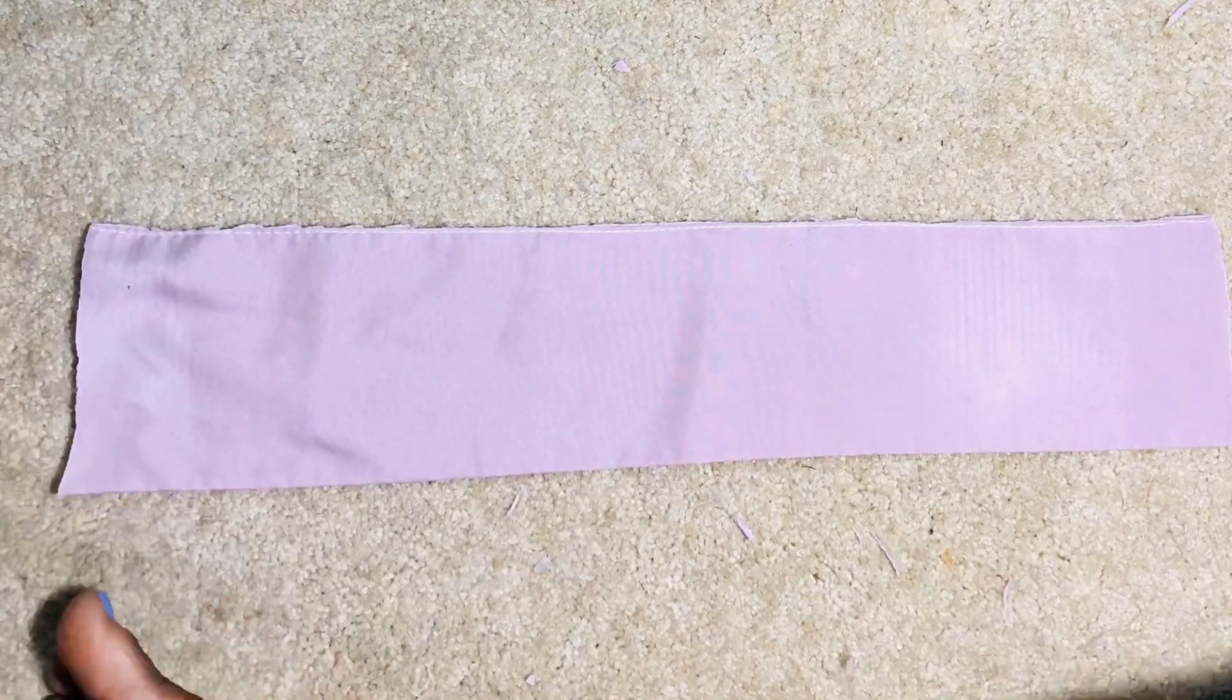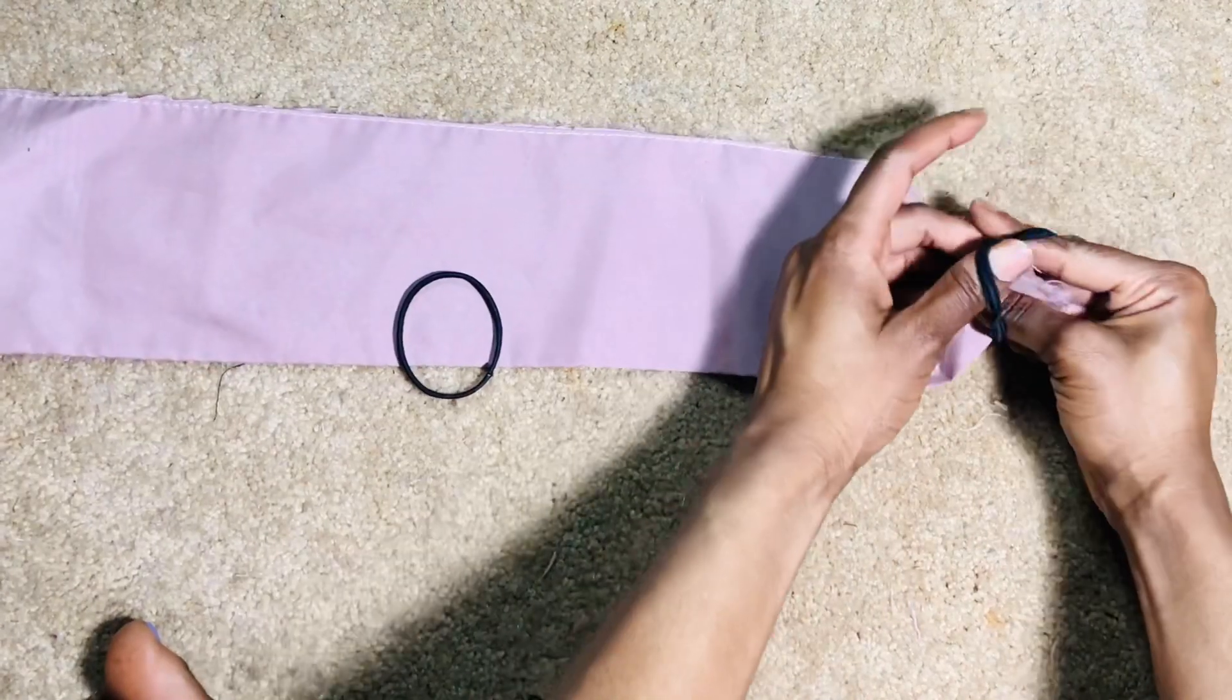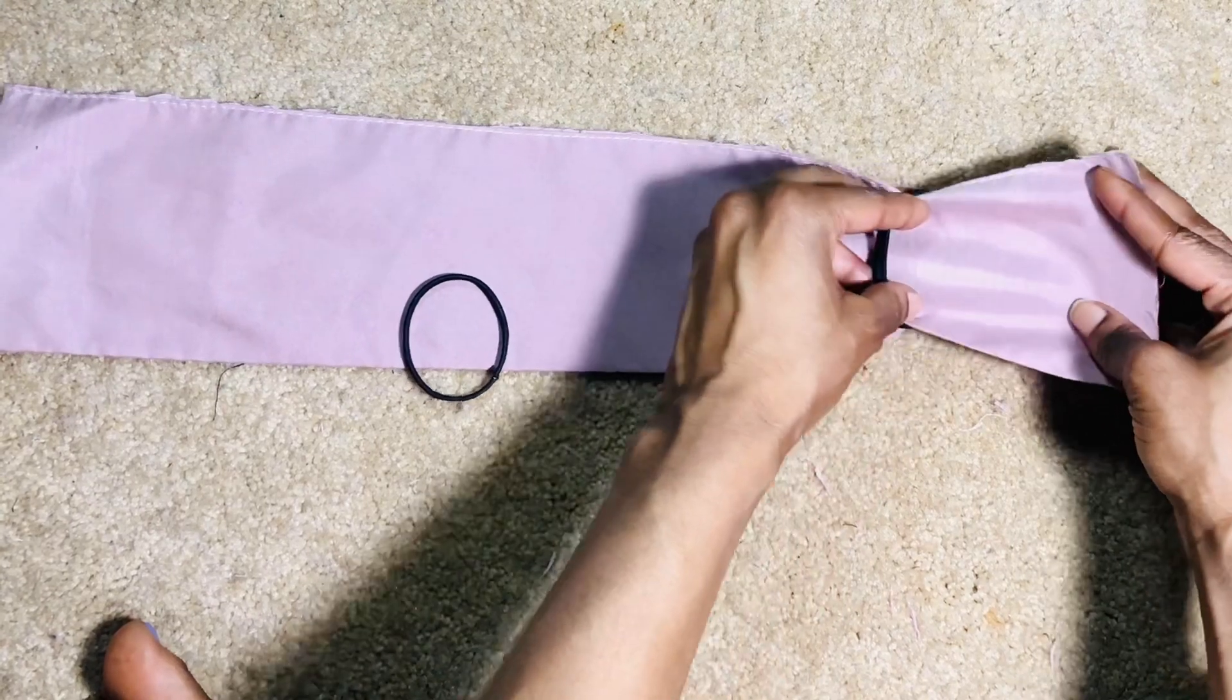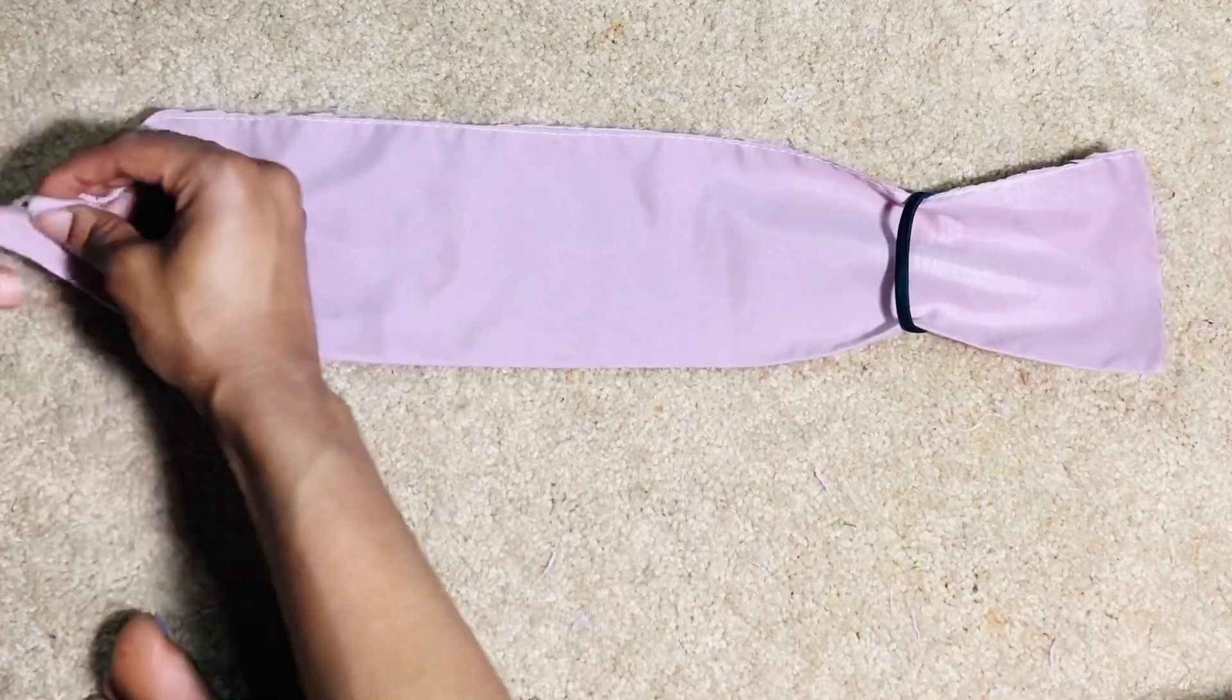Now we're going to go ahead and place these hair ties on the ends of the pillowcase that we cut out.